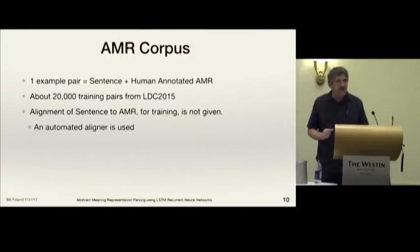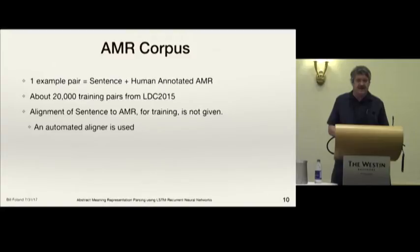An AMR corpus consists of sentence and AMR pairs. There are about 20,000 training pairs from LDC 2015 that we used. The alignment of sentence to AMR for training isn't given so an automated aligner is used.